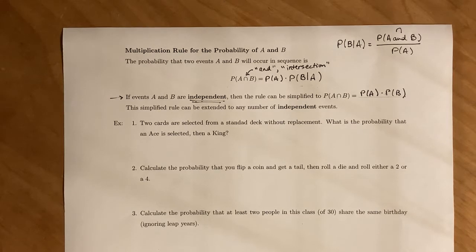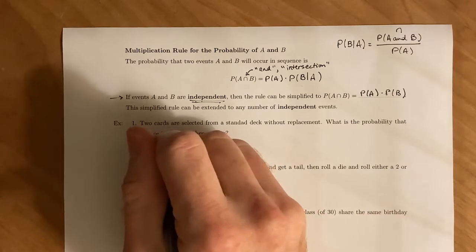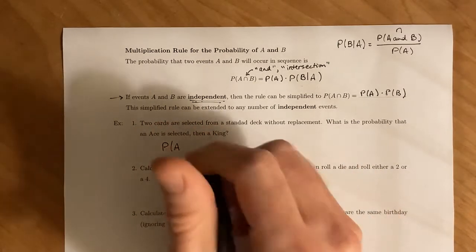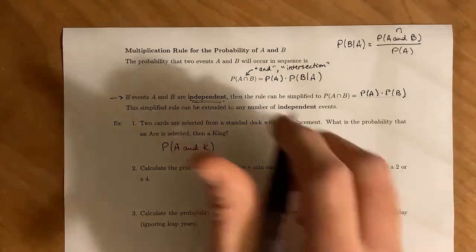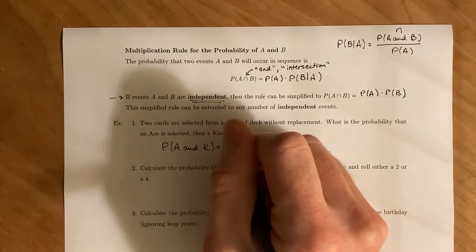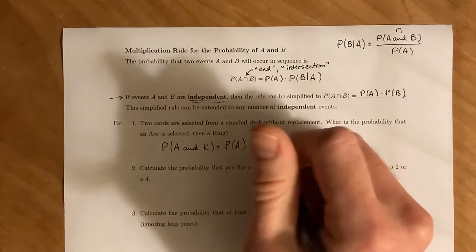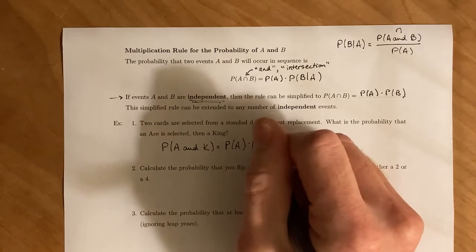So if we look at this, you have two cards are selected from a standard deck without replacement. So we want to figure out what is the probability of selecting an ace and then a king.